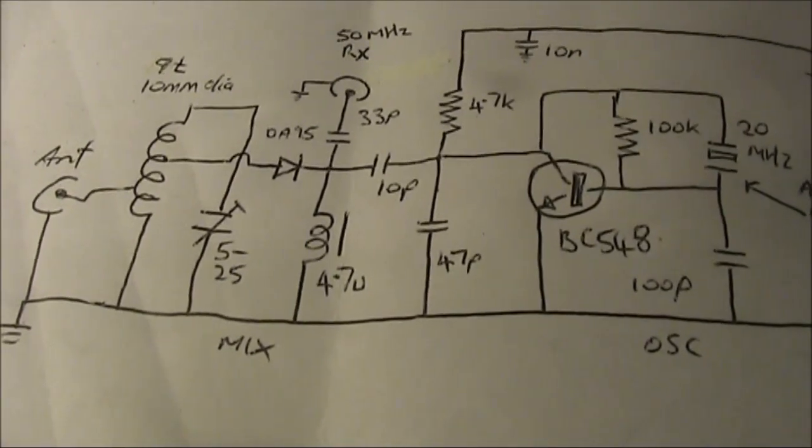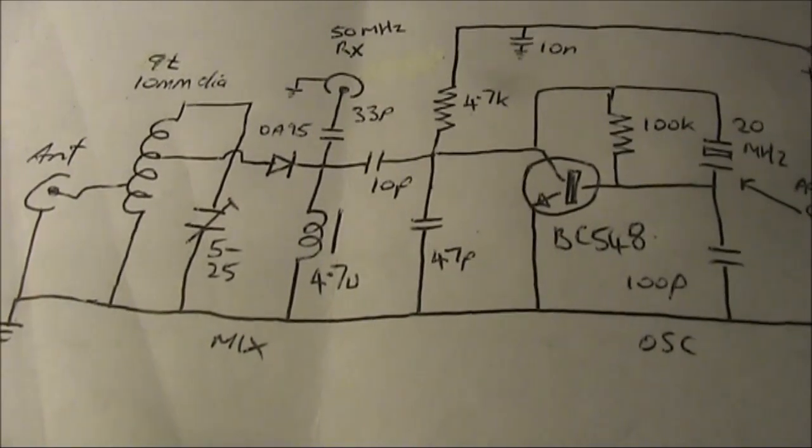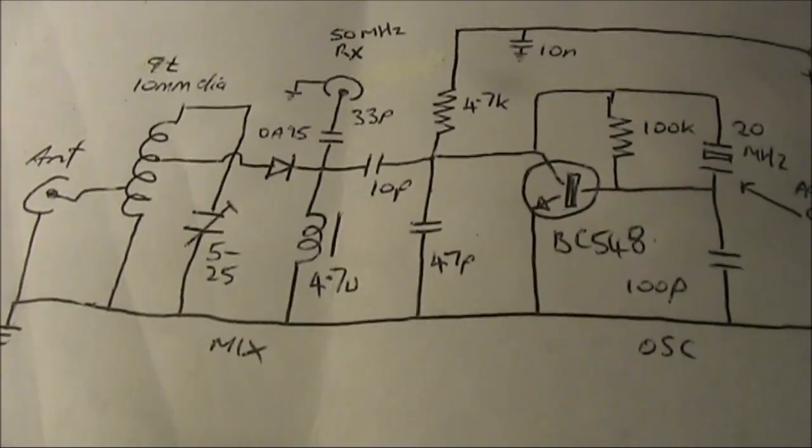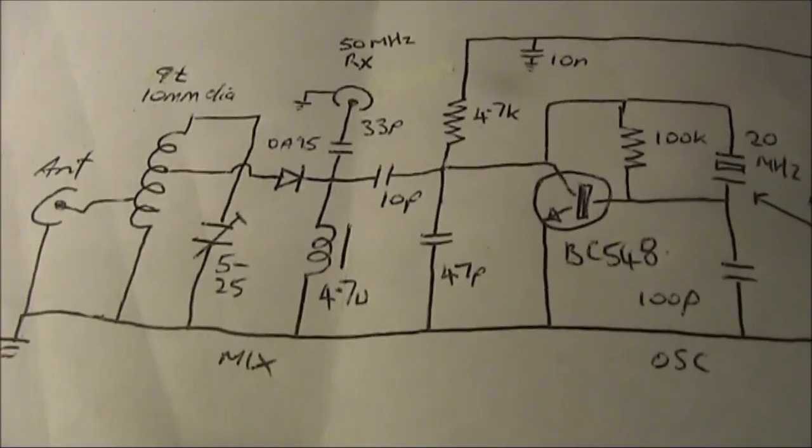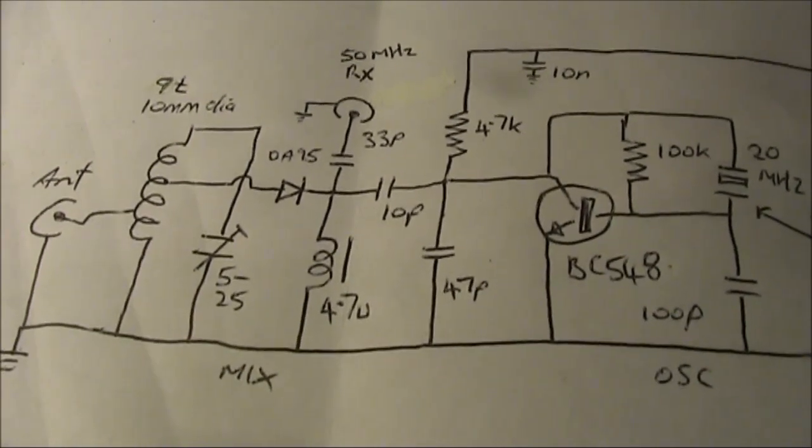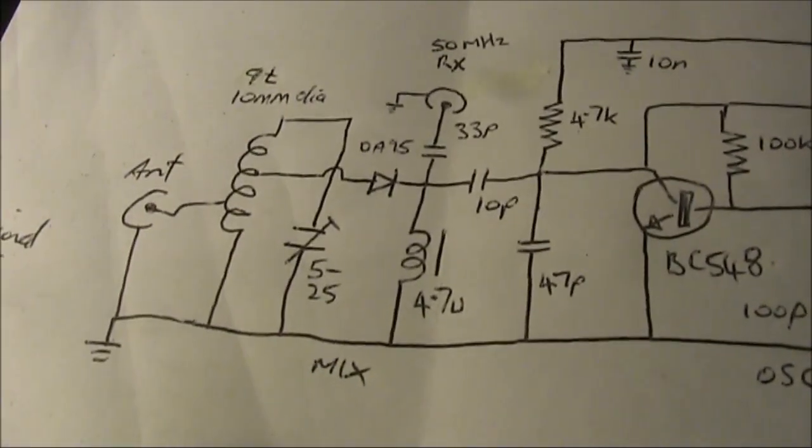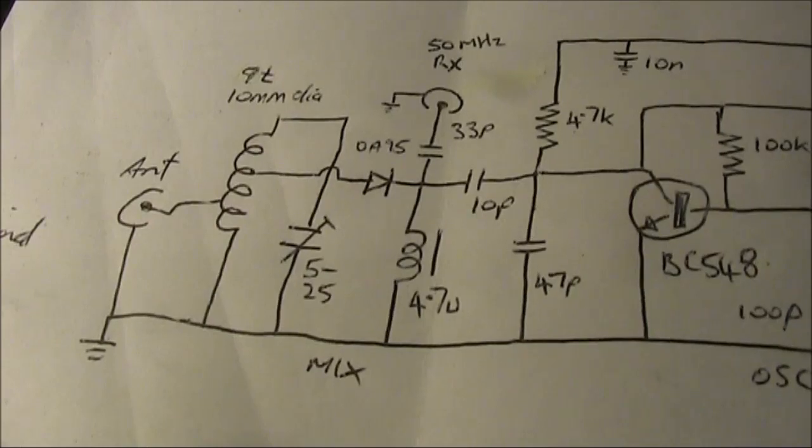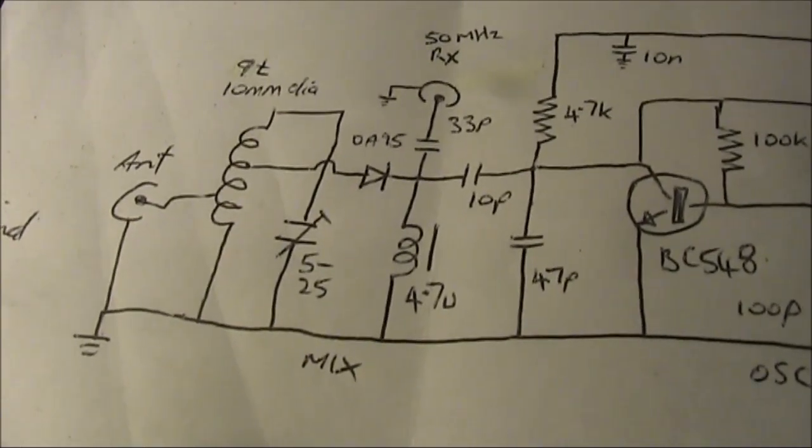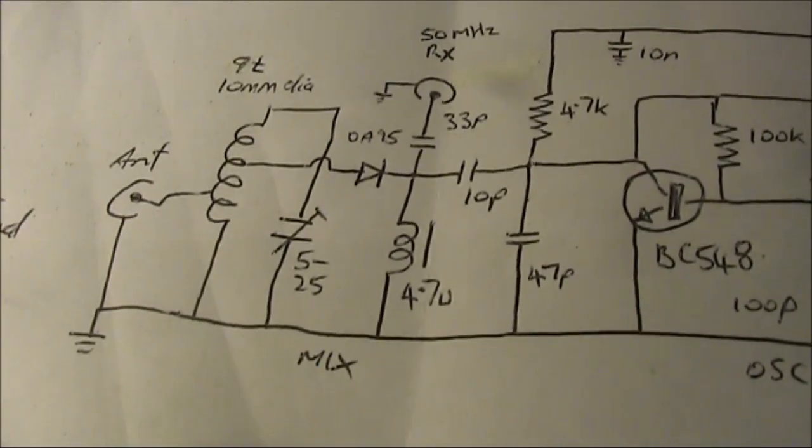In terms of getting the converter to work, once you've established that the crystal oscillator is operating by tuning across its signal with a 20MHz receiver, you plug in your 50MHz receiver and apply a signal at 70MHz to the antenna socket, or at least via a wire nearby.